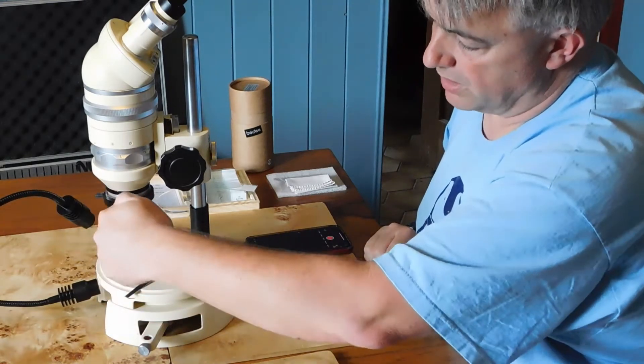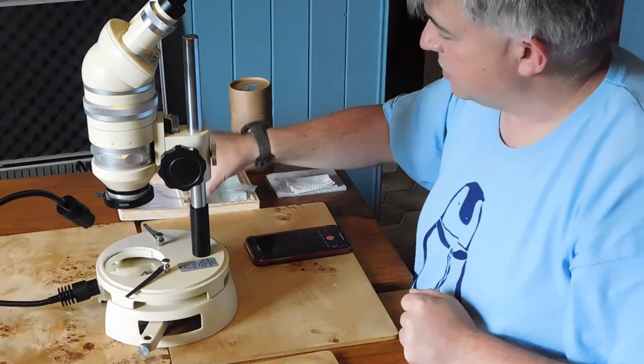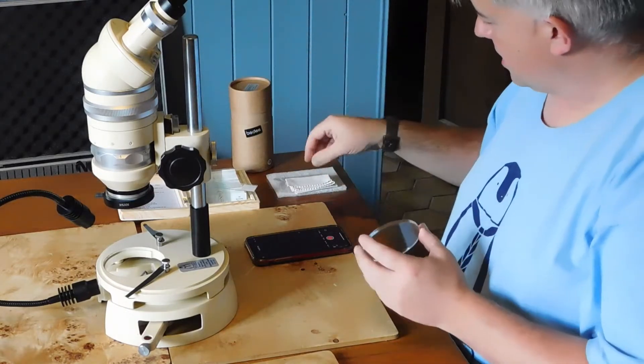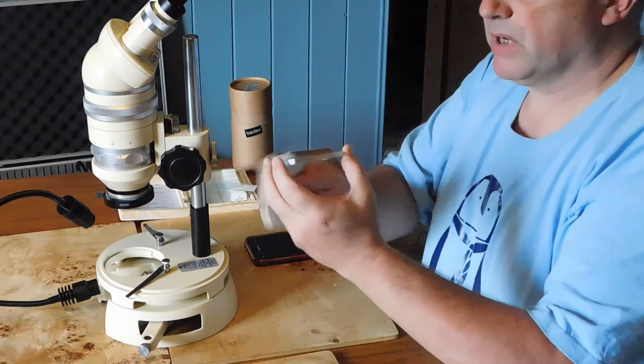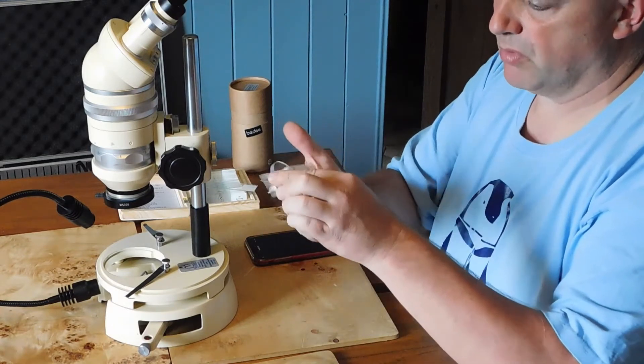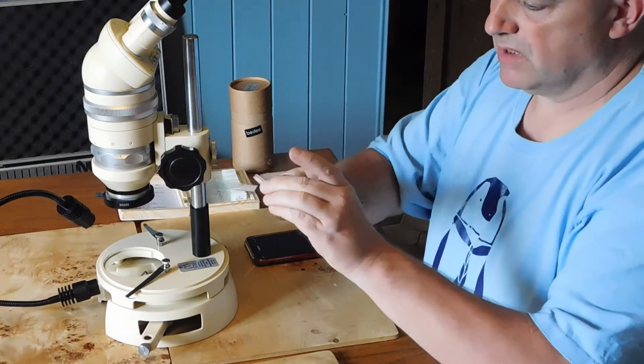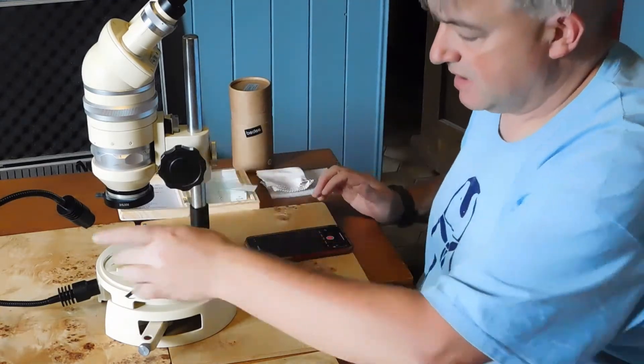You can see I've got one light pointing down on the stage, and I'm going to use the clear stage. It's worth giving the stage itself a wipe because we're going to be putting light up through it, so you want to get rid of any dust.